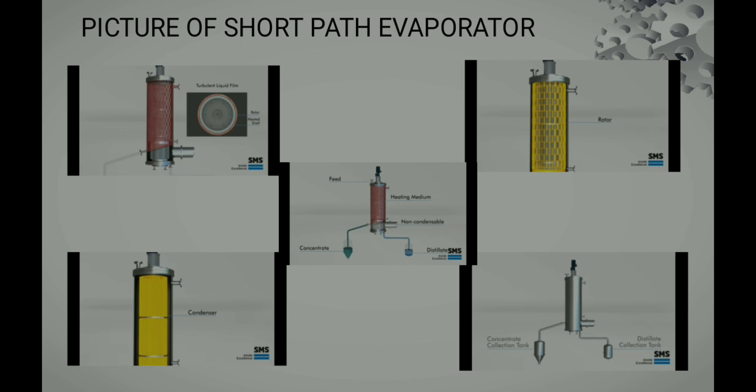In this slide we are seeing pictures of the short path evaporator. In the first image we can see that the heated medium starts working where the feed is introduced above the heated surface. In the second image we can see that the rotator starts to rotate and the feed is introduced, making sure that the feed is evenly distributed and the heat directly contacts the feed. It converts into vapor, and that vapor goes to the internal condenser, which we can see in the third image.